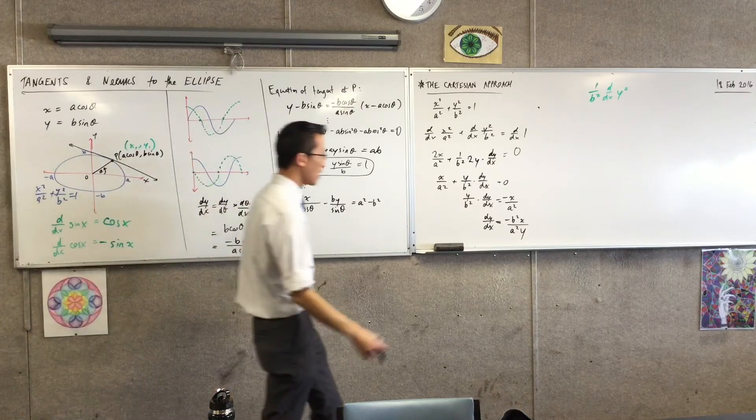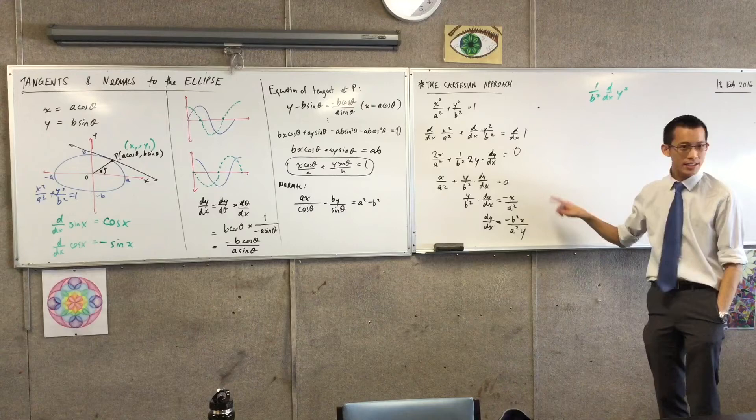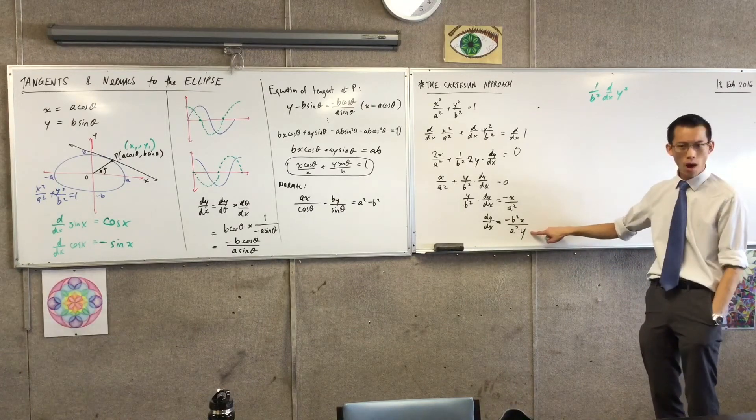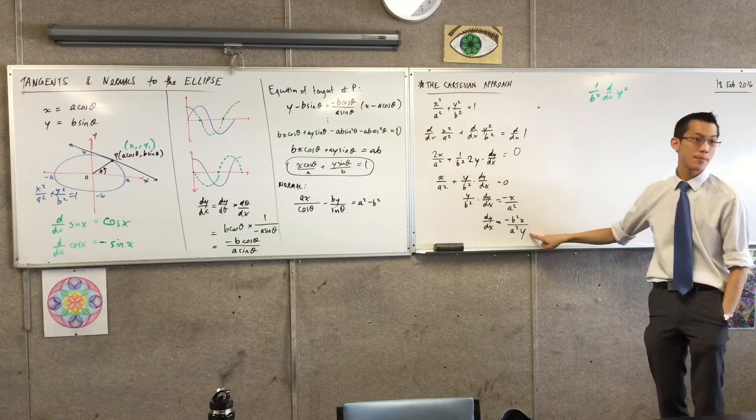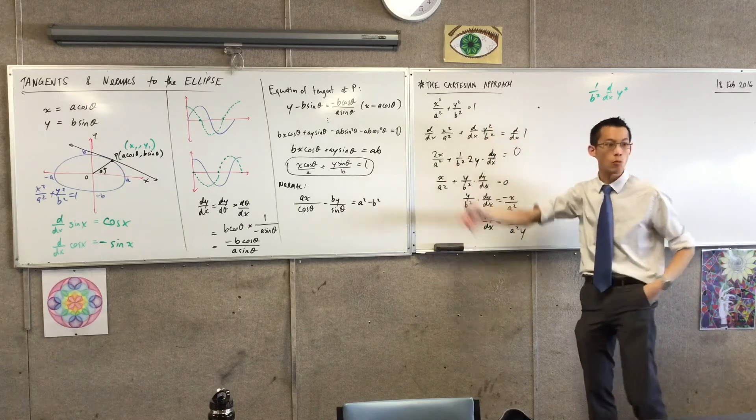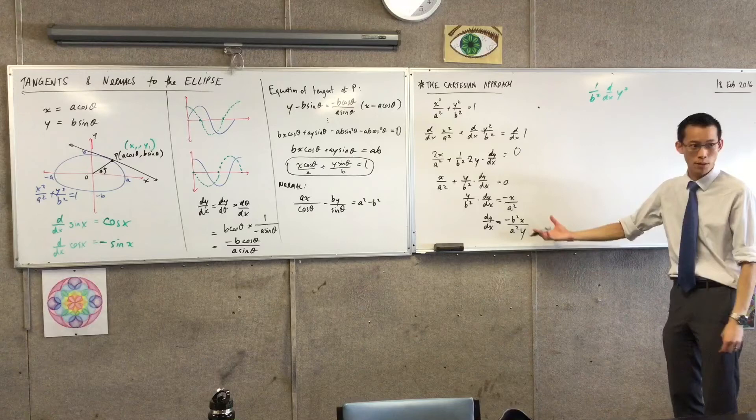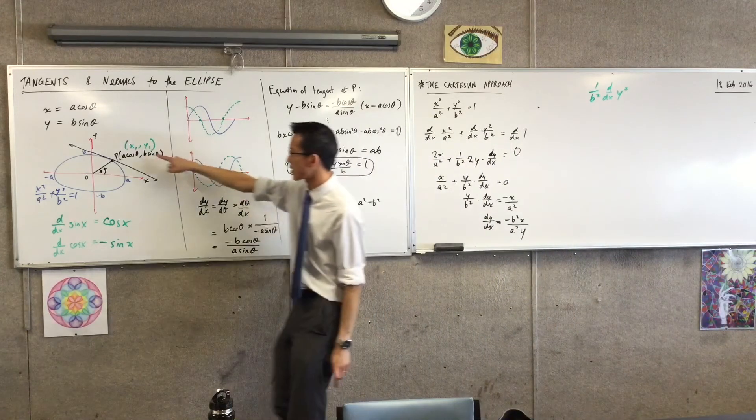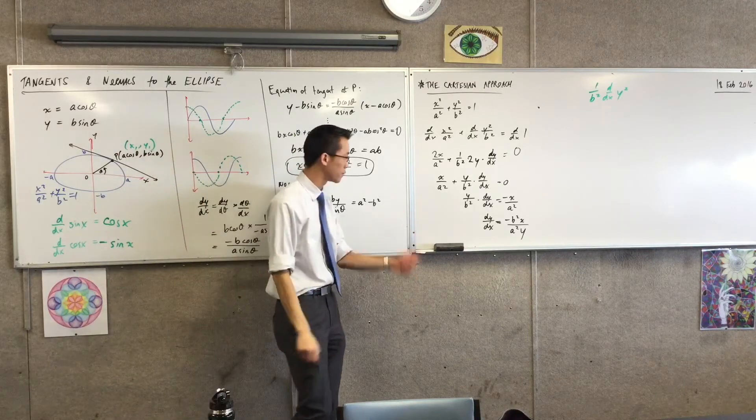So let's notice a couple of things. Firstly, the weirdest thing about implicit differentiation is that you end up getting y's, or theta's, or whatever your other variable was, you end up getting them in the derivative. That's kind of strange. We're not used to that. But that's because we differentiated it while the x's and y's were entangled with each other. So it's no surprise that you end up with both of them in your derivative. That's no problem. For the x's and y's, I know exactly what the x and the y are. They're just some numbers, so I can just put them in.